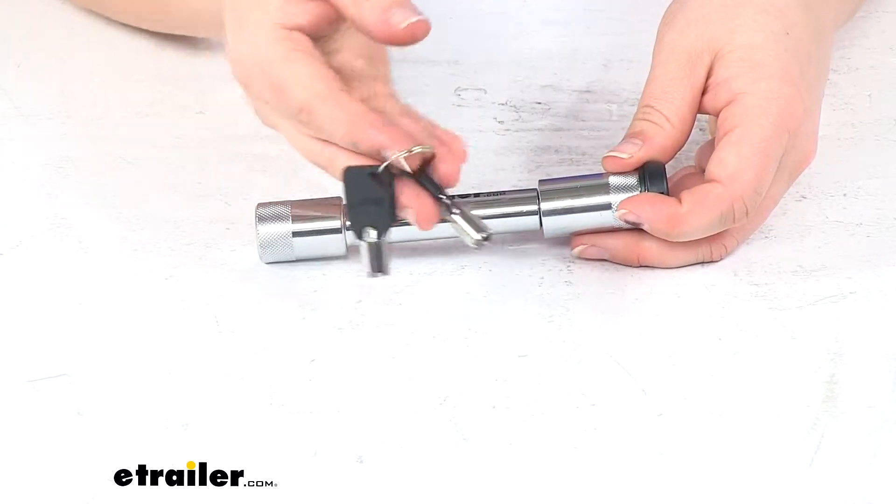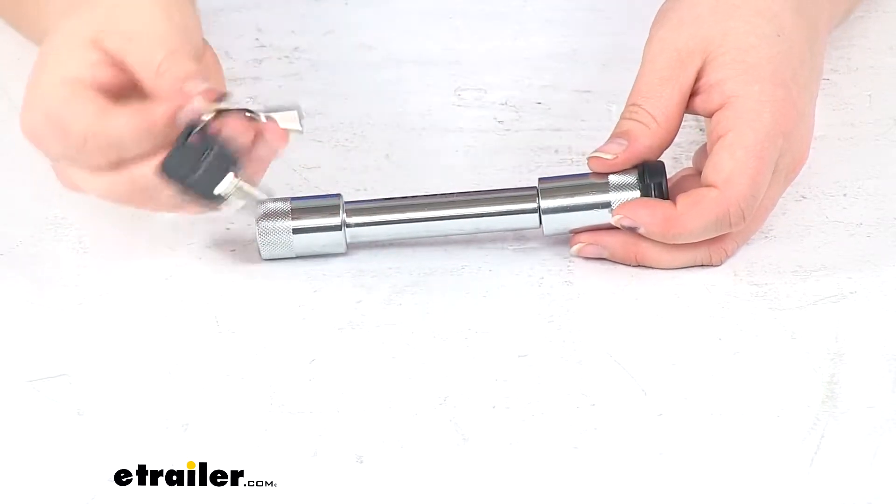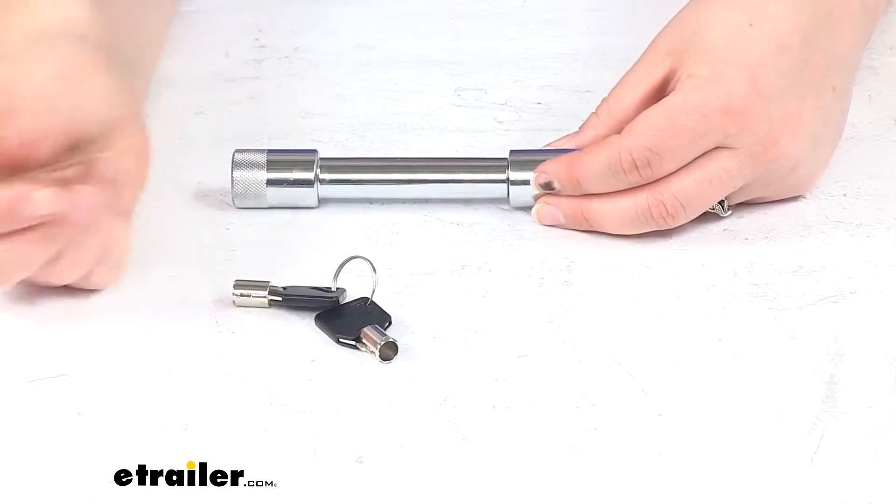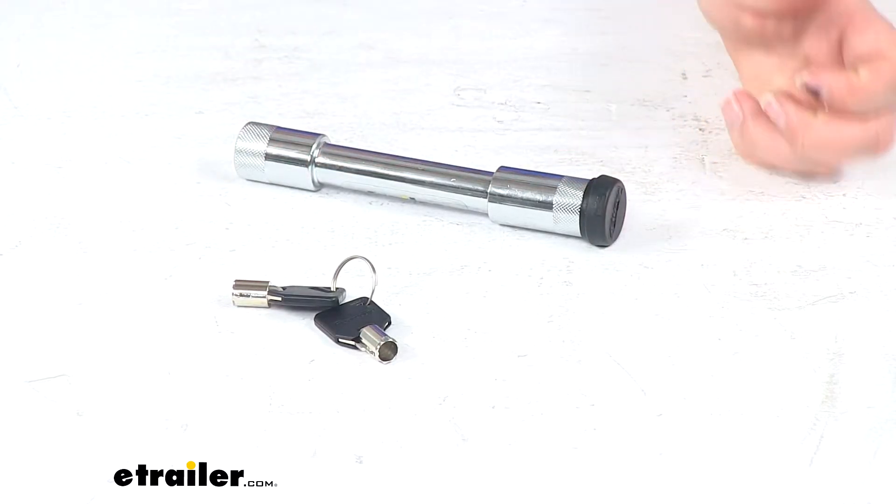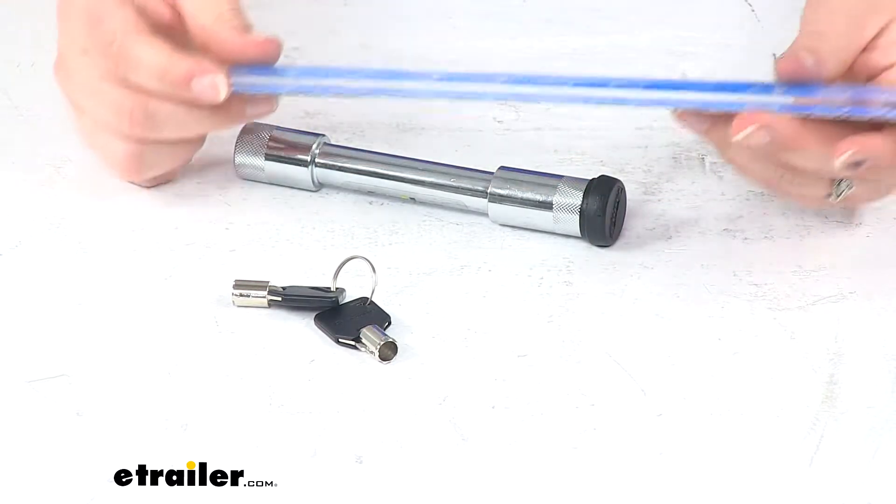We do get 2 keys to go with our lock, so you can have one on your key chain, maybe one in your glove compartment or wherever you want to store them to have them at easy access.